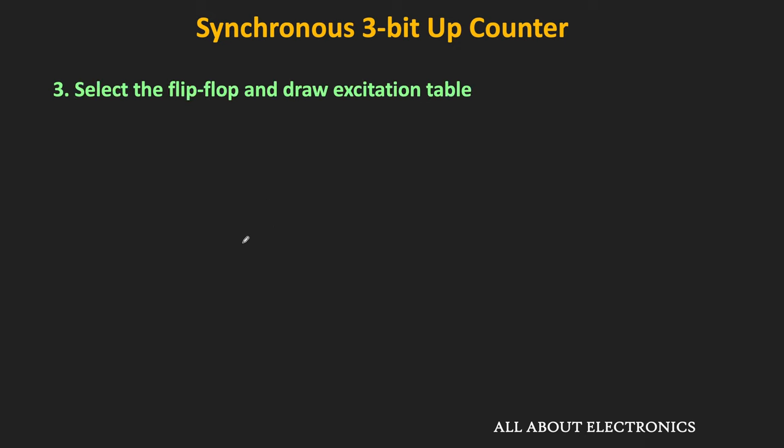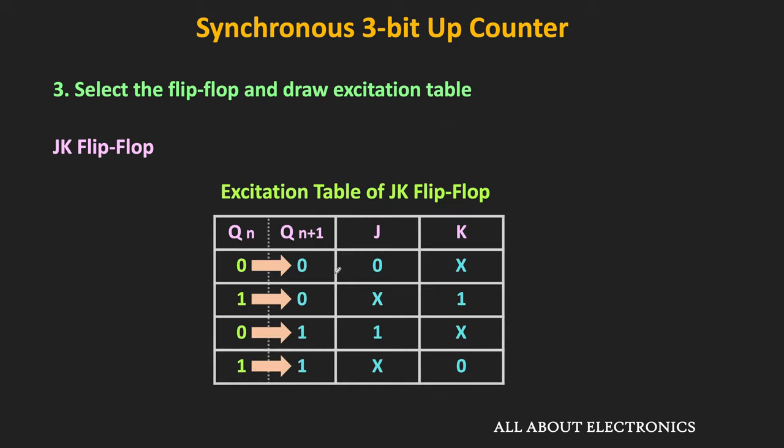The third step is to select the type of flip-flop we are going to use to design this counter. Once we decide the type, we need to draw the excitation table of the counter. In this case, we are going to use the JK flip-flop, so all 3 flip-flops will be JK flip-flops. The excitation table of the JK flip-flop shows the present state, the next state, and the required inputs for the flip-flop to transition between states.